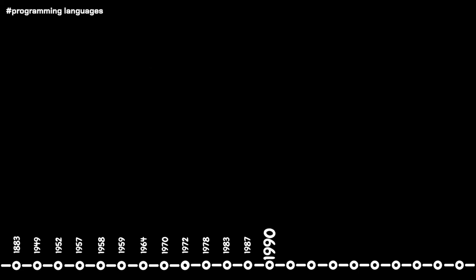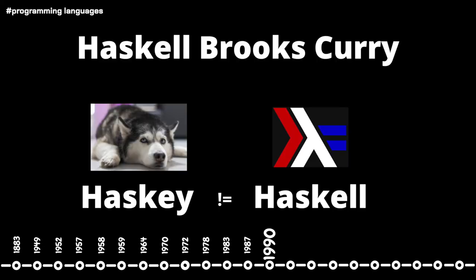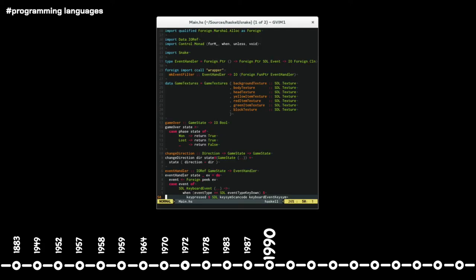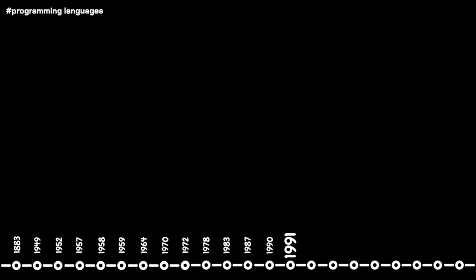In 1990, named after American mathematician Haskell Brooks Curry, the programming language Haskell was created. It is mainly a functional programming language used mainly for intense number crunching. Haskell innovated with type classes and utilized type inference and lazy evaluation.